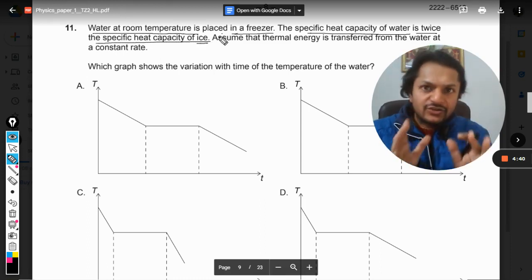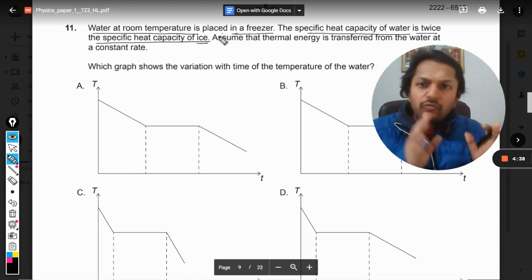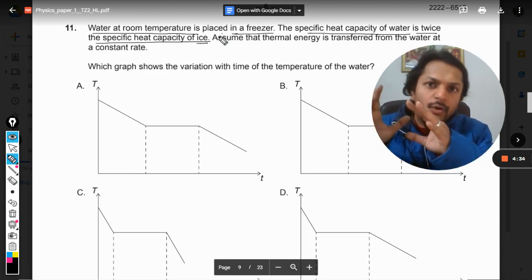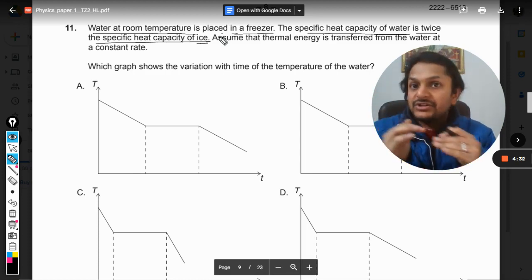So actually there is no ice there, there's only water that we have in a beaker. We just keep it in the freezer and now it is losing its temperature, the temperature is falling.